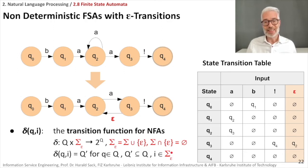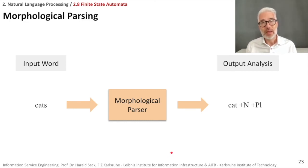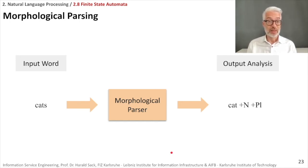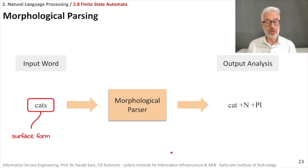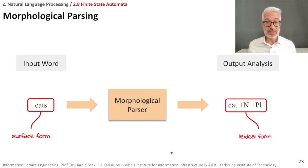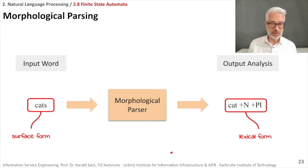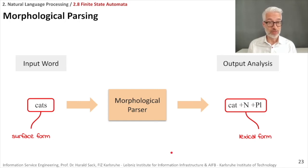Let's go back to our original task: using finite state automata for morphological parsing. The task is as follows: given an input word like 'cats' — our so-called surface form — the morphological parser creates a lexical form, giving back the stem 'cat', identifying it as a noun (+N), and indicating it is the plural form (+PL). That is the lexical form — the morphological analysis of the surface form 'cats'.